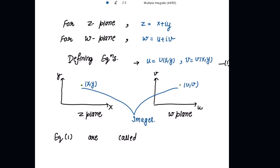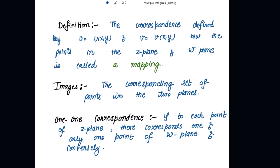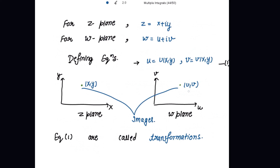These defining equations are called transformations. The correspondence defined by u = u(x, y) and v = v(x, y) between points in the z-plane and w-plane is called a mapping, and the corresponding set of points in the two planes are called images. For 1-1 correspondence: if to each point of the z-plane there corresponds one and only one point in the w-plane, then we say that this correspondence is 1-1.